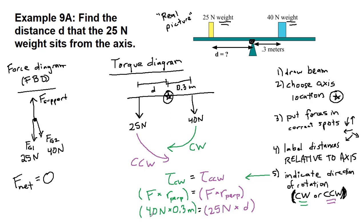All we have to do now is divide both sides by our 25 Newtons. We can check and we make sure that the units are going to leave meters behind, which is exactly what we're hoping for. And so our final result here is that the distance is 0.48 meters, because that's 40 times 0.3 divided by 25 in our calculators.